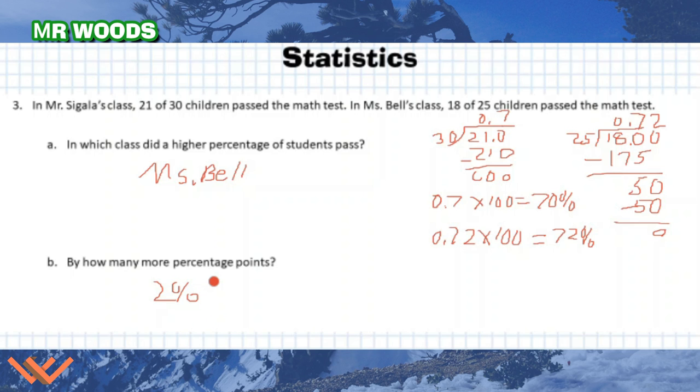Now, if this was an actual test, I would say Ms. Bell's class passed by 2 percent more. Up here, it would be which class did percentage of students pass? Ms. Bell's class had a higher percentage of students pass. I want to be complete sentences and such like that. If you turn this in to me, I might take that off for you if there was some instructions on there where it said, hey, answer in complete sentences or give me a full answer. But I would accept this if I did not have that included.